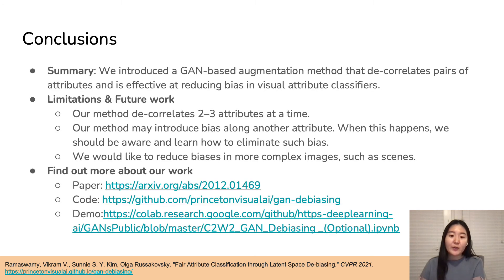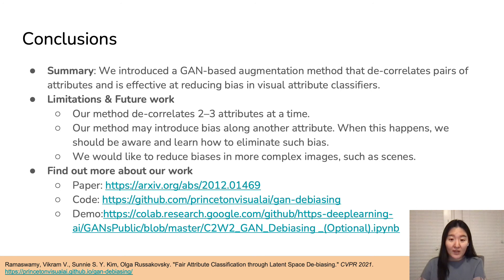In summary, we introduce a GAN-based data augmentation method for training fairer attribute classifiers when correlations between the target and protected attributes may lead classifiers to learn spurious correlations, and our findings show the promise of augmenting data in the GAN latent space. One limitation is that our approach currently can only decorrelate two or three attributes at a time, and it's possible that decorrelation adds bias along another attribute — measuring and eliminating this is future work. As a longer-term goal, we'd like to extend our method to reduce biases in more complex images, such as scenes in the COCO dataset.